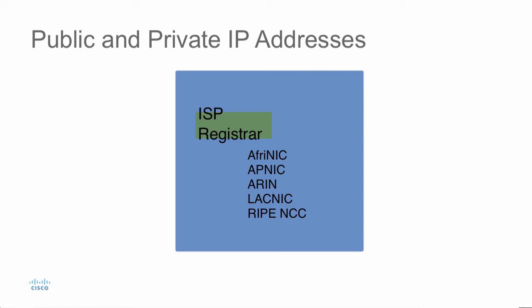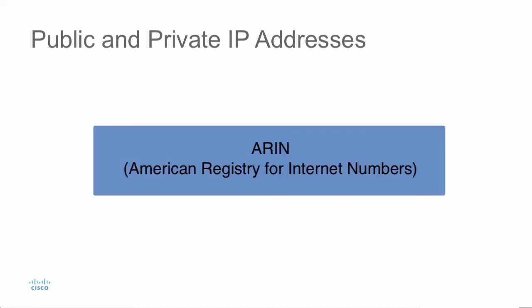So if you're in the United States, you're going to go with the registrar known as ARIN, which stands for the American Registry for Internet Numbers. They are going to allocate an address space to you if it's available. And then from that chunk, you can go ahead and allocate address space to your customers. That's how your internet service providers do it.